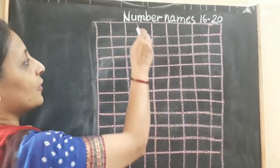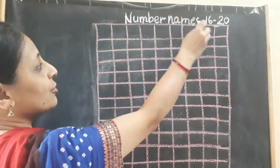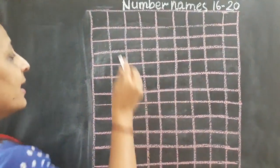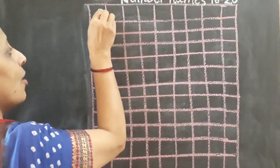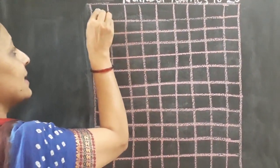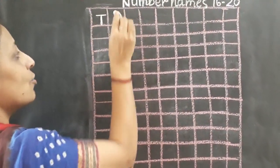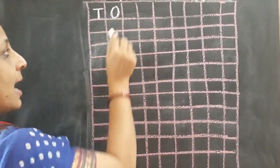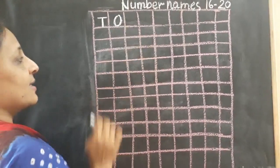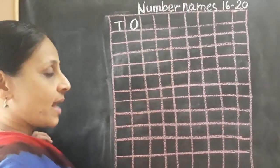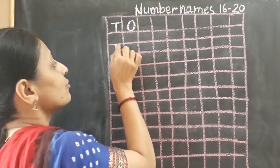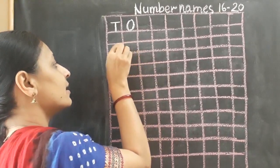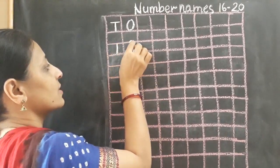Now children, first of all you are going to write number names 16 to 20 as heading. Now I am going to write T and O. As you already know, T represents tens and O represents ones. Now we are going to write numbers under the T and O box.